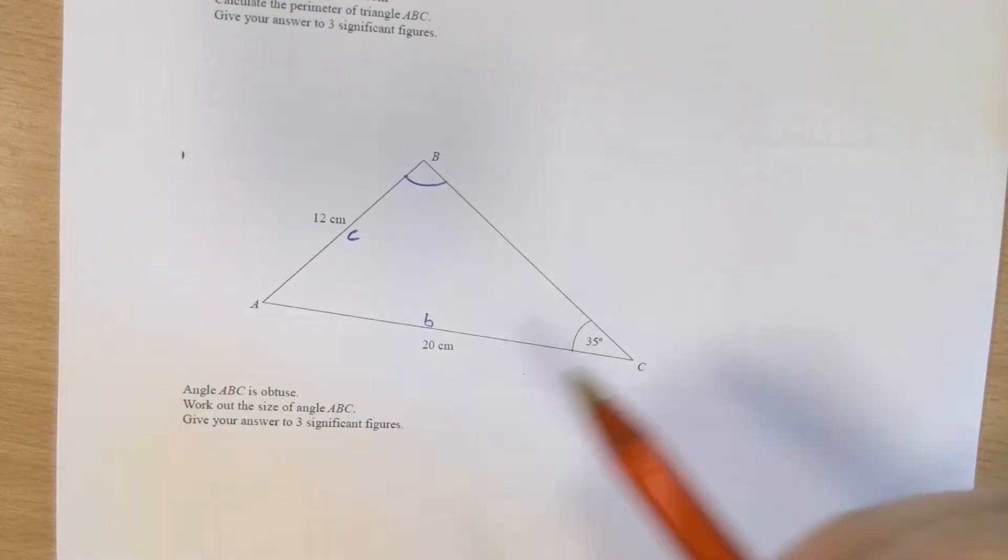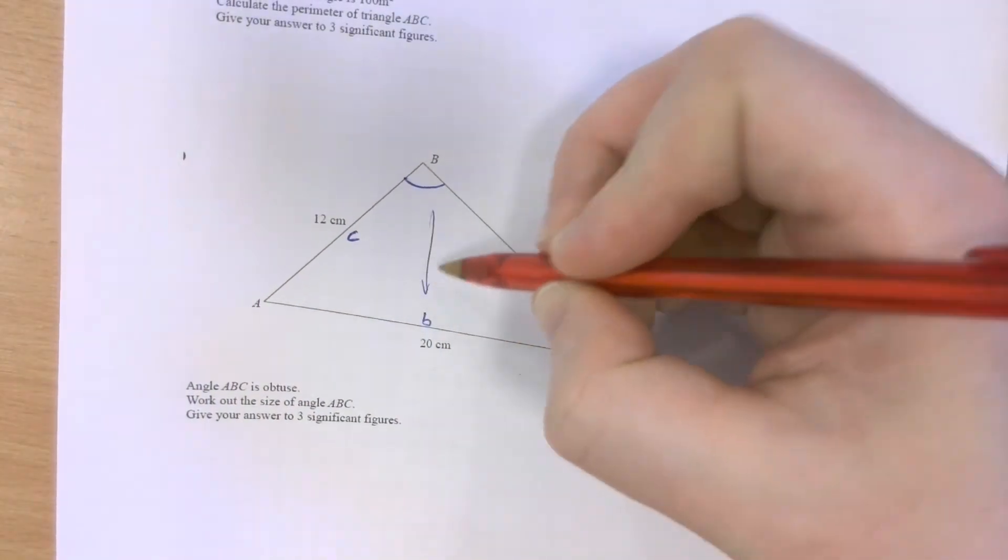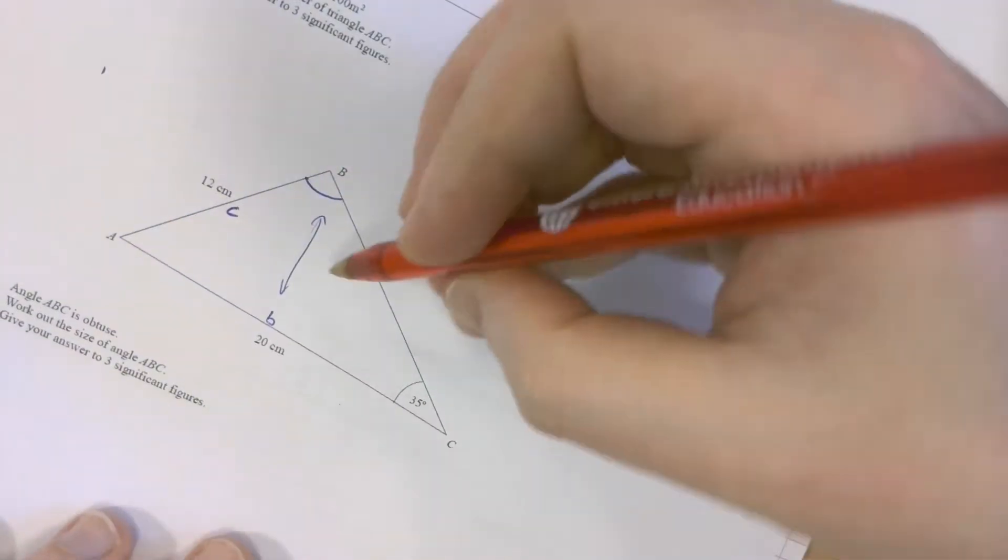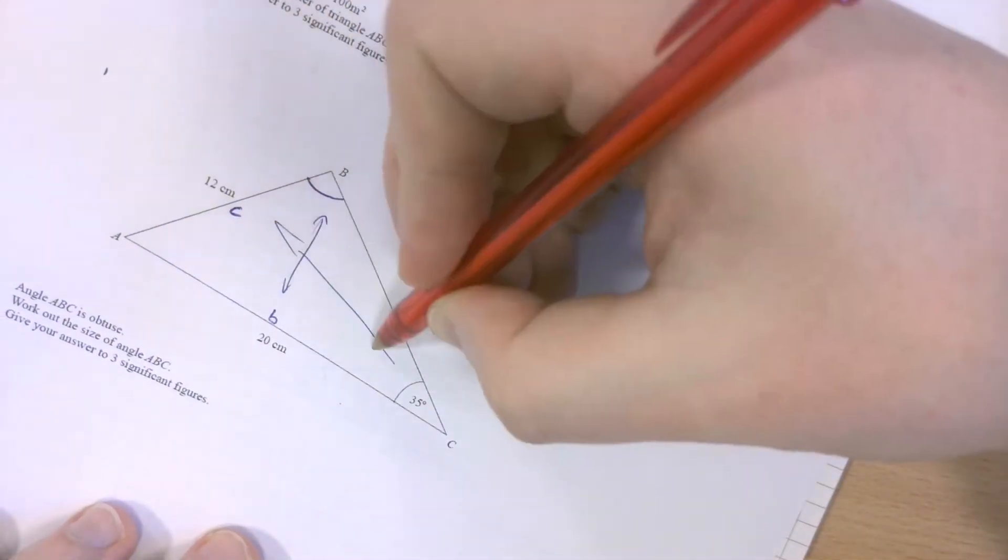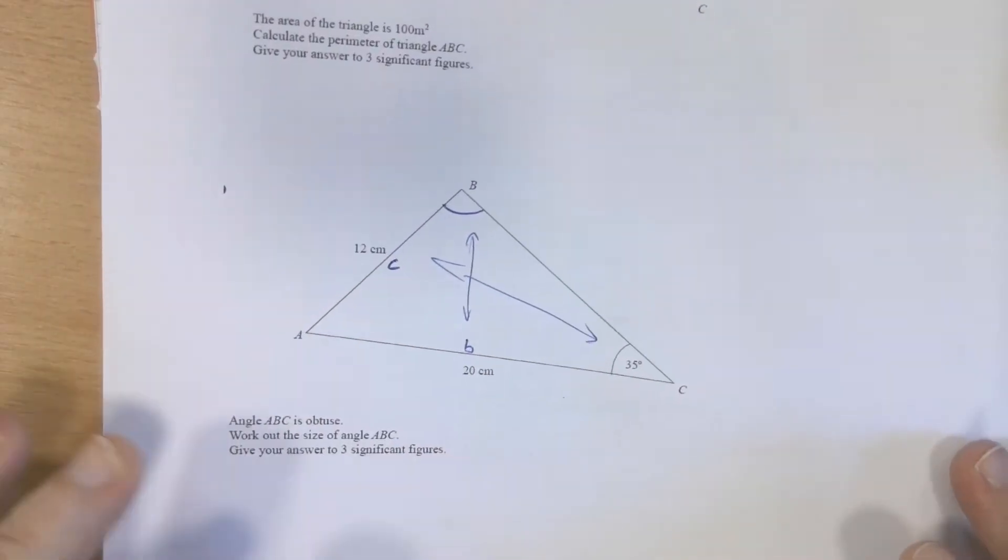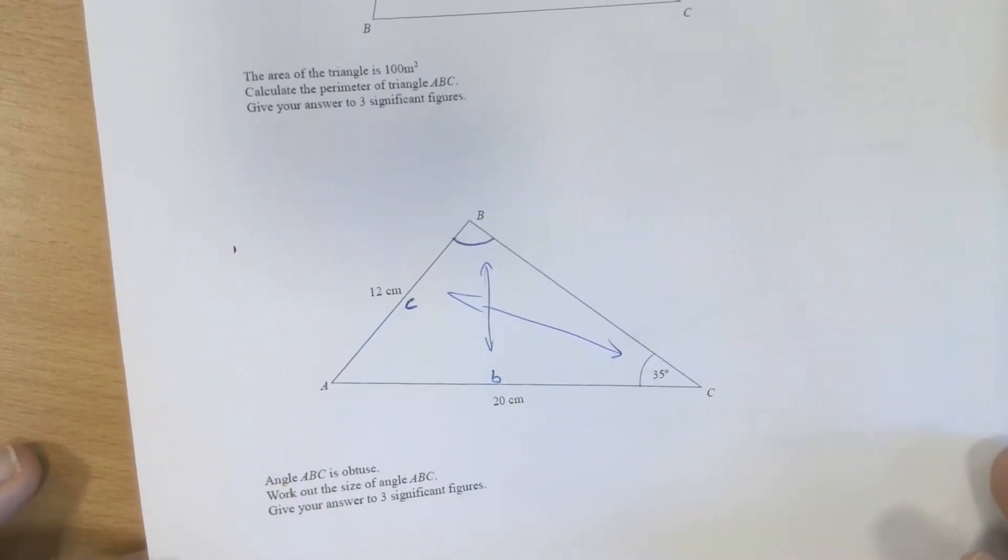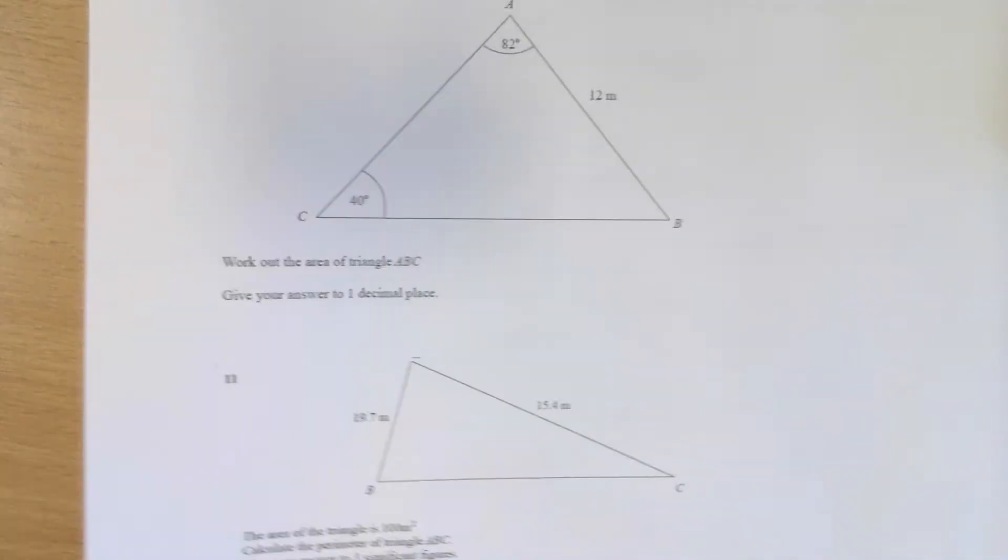I should notice I'm interested in this angle. I've got the opposite side length and I've got this angle over here and this side length. Two pairs of opposite angles and side lengths. That's the sine rule.